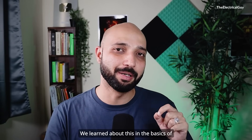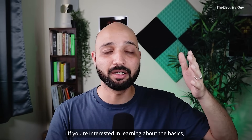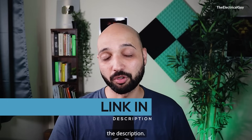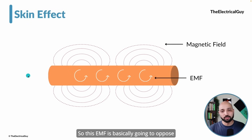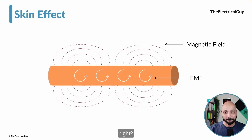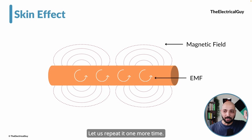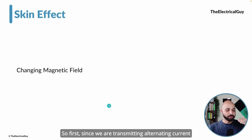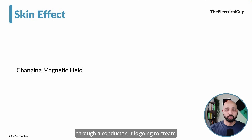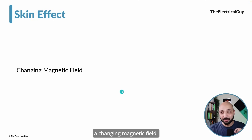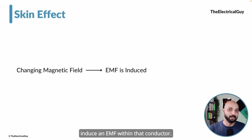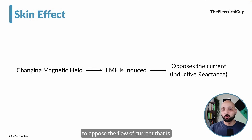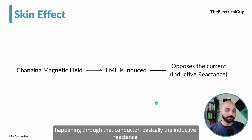We learned about inductive reactance in the basics of AC circuit playlist — a link will be in the description. So this EMF is basically going to oppose the current flowing through this conductor. Let us repeat the sequence: since we are transmitting an alternating current through a conductor, it creates a changing magnetic field. That changing magnetic field induces an EMF within the conductor, and this EMF opposes the flow of current — that is the inductive reactance.